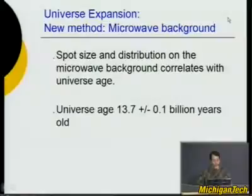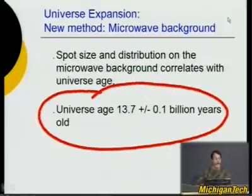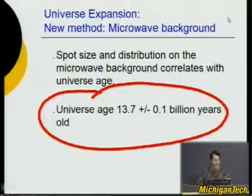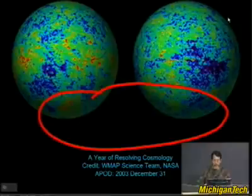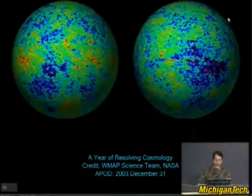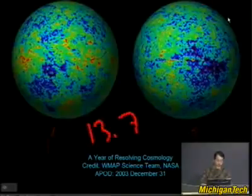The most recent method is by calculating the spot size of the cosmic microwave background. Combined with other methods, this has given us a quite accurate age of the universe, determined in the past few years to be much more precise than ever before. Our universe today is 13.7 plus or minus 0.1 billion years old. By analyzing the spots on the microwave background and their distribution, you get an age of 13.7 billion years.